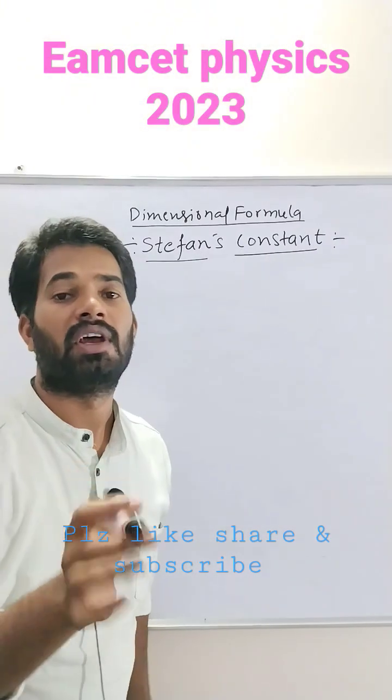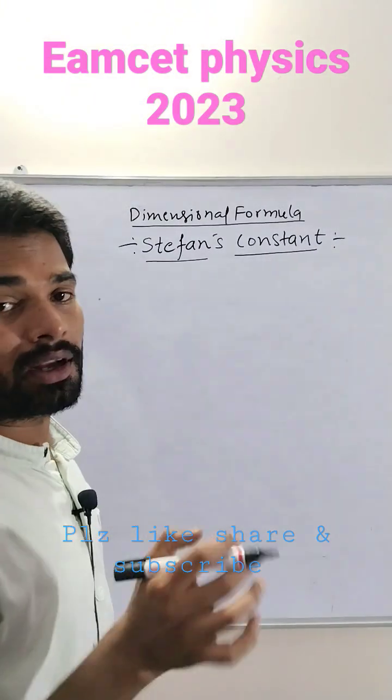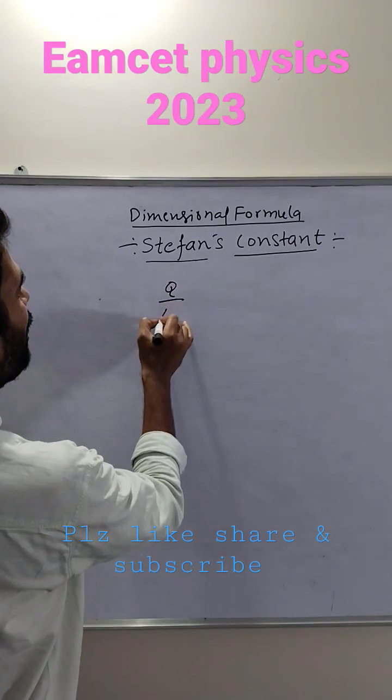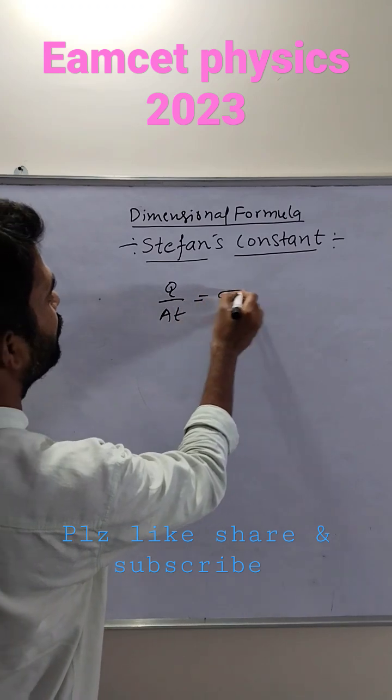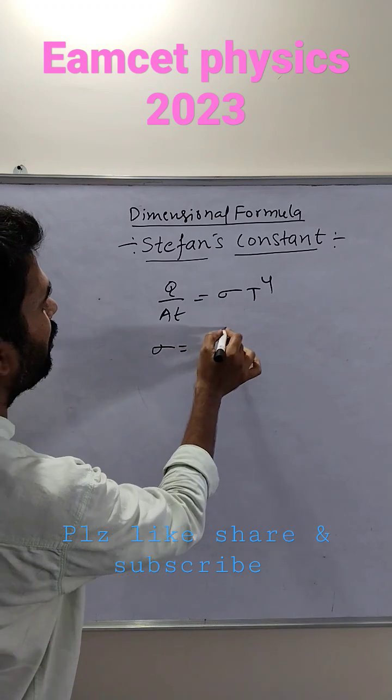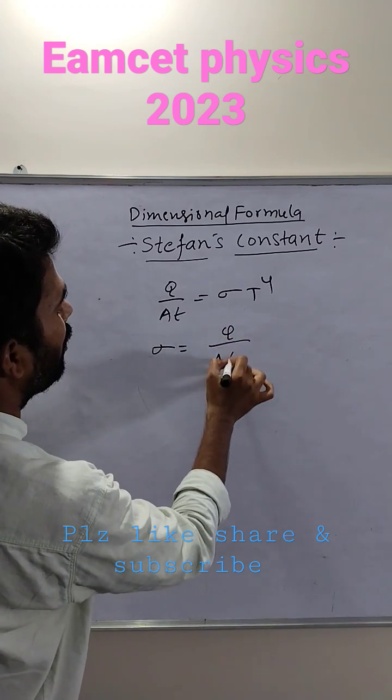Alright, dimensional formula for Stefan's constant. According to Stefan's law, we can write q by At is equal to sigma T to the power 4. This is the formula. Sigma is the Stefan's constant. Sigma equal to q by At T to the power 4.